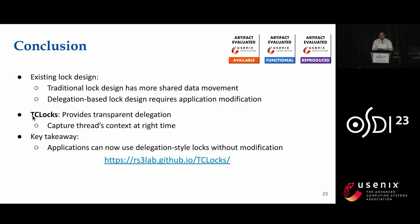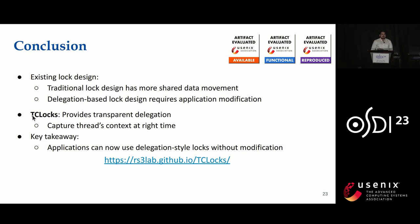In conclusion, existing traditional lock designs use the standard lock and unlock API but suffer from performance degradation due to shared data movement. Delegation-based lock designs provide locality for shared data but require application modification. TCLock provides transparent delegation — without any application modification, it provides minimal shared data movement. The key idea is to capture the thread context at the right time. TCLock is the first work to enable delegation-style locks without any application modification. Thank you.